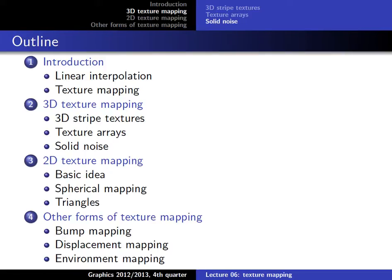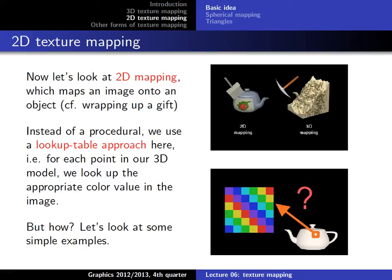We talked about 3D texture mapping, but of course we also have 2D texture mapping, which is actually the thing that usually comes immediately to mind when you think about texture mapping. That is taking a 2D image and putting it onto a 3D object, in a similar way as you use a photo wallpaper to decorate your room or paper to gift wrap — you take a 2D object and place it onto a 3D object.